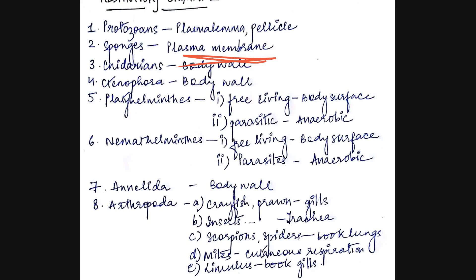Also in ctenophora and the comb jellies, that is for example the ctenoplana, the body wall is also the main respiratory organ. Now coming to the platyhelminthes, which are also known as the flatworms. In them there are two categories: one is the free living and one is parasitic. The free living forms are generally aerobic — they undergo aerobic respiration. The free living forms, for example planaria, have the body surface as their respiratory organ.